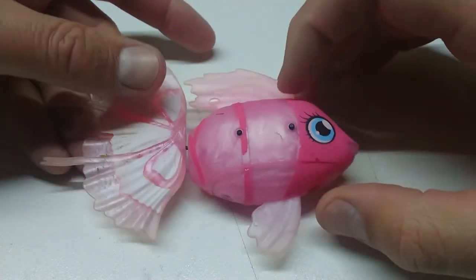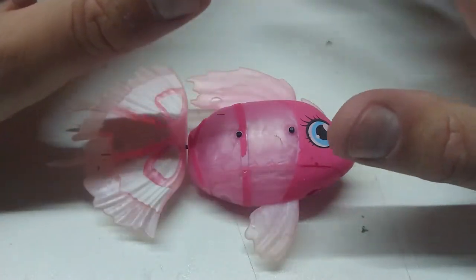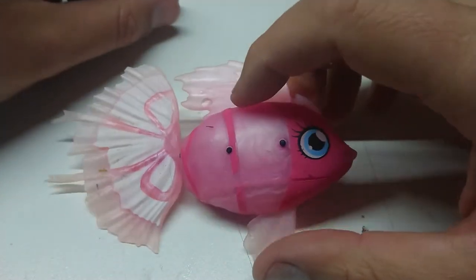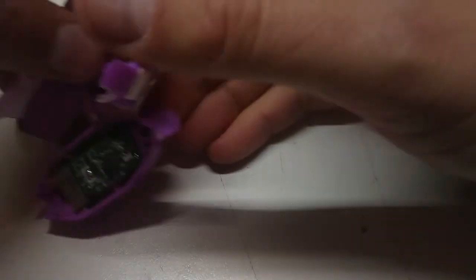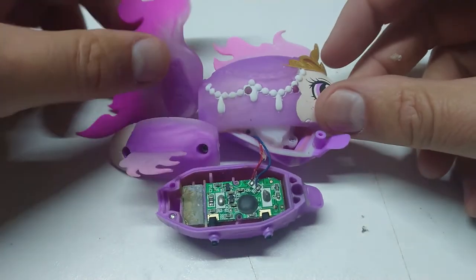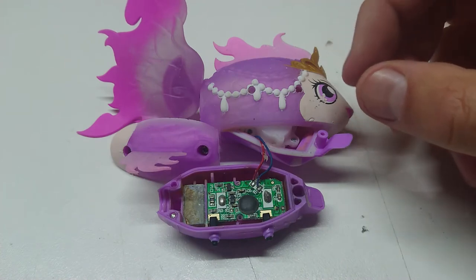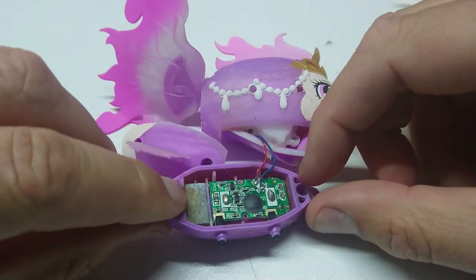Now, this one, my apprentice is absolutely obsessed with these things. Now this was one she fell in love with, but then we had to get a friend. Of course, we got the princess one. Now, princess one recently got full of water. You can see some of the corrosion there.